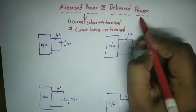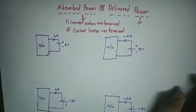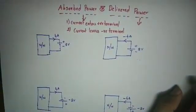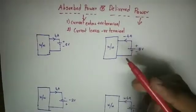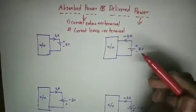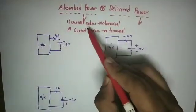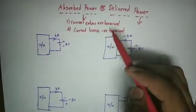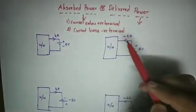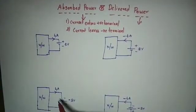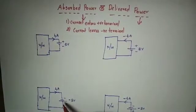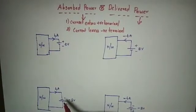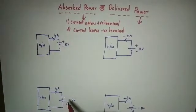For delivered power, there is a source. If the current enters the negative terminal of the voltage source, this voltage source is going to deliver power.